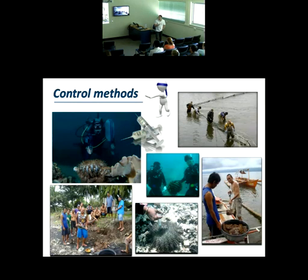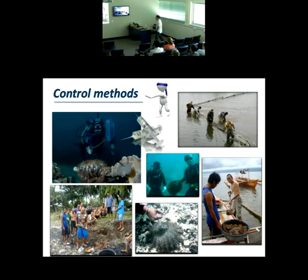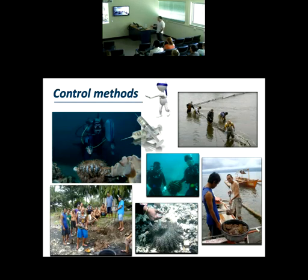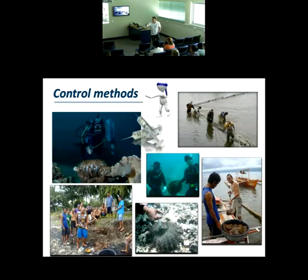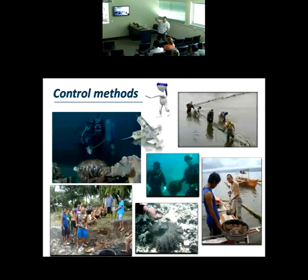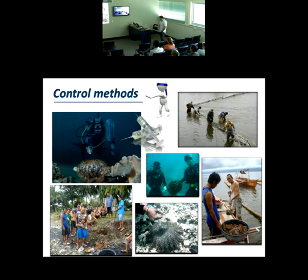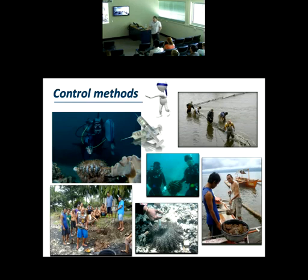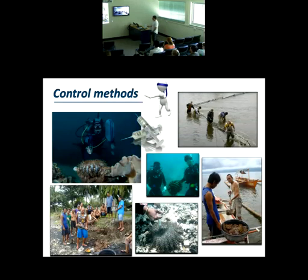This is another huge knowledge gap — we are spending a lot of money on control methods. Right now we are using fences, but one single starfish can put 60 million eggs that disperse via ocean currents. There is also manual collection followed by burial on shore — it's very expensive. The other technique is syringe injections.